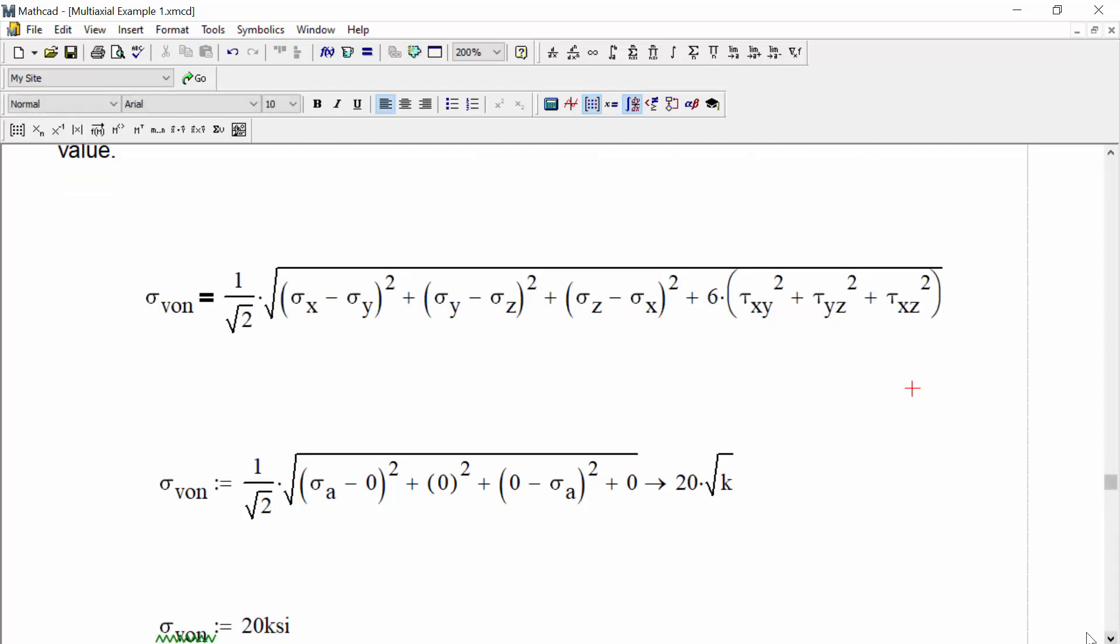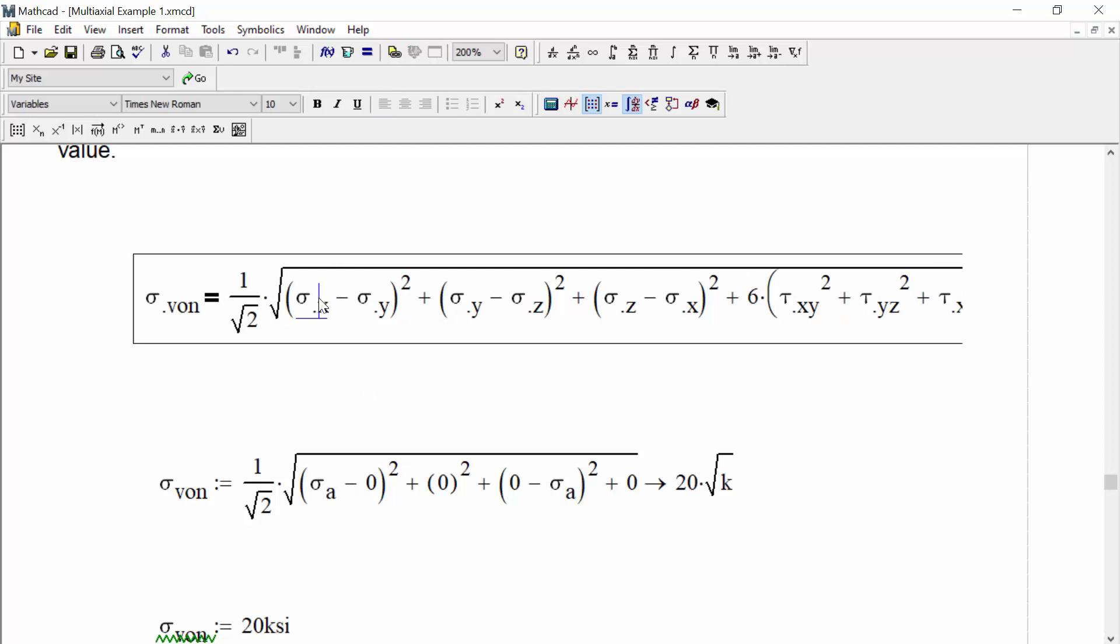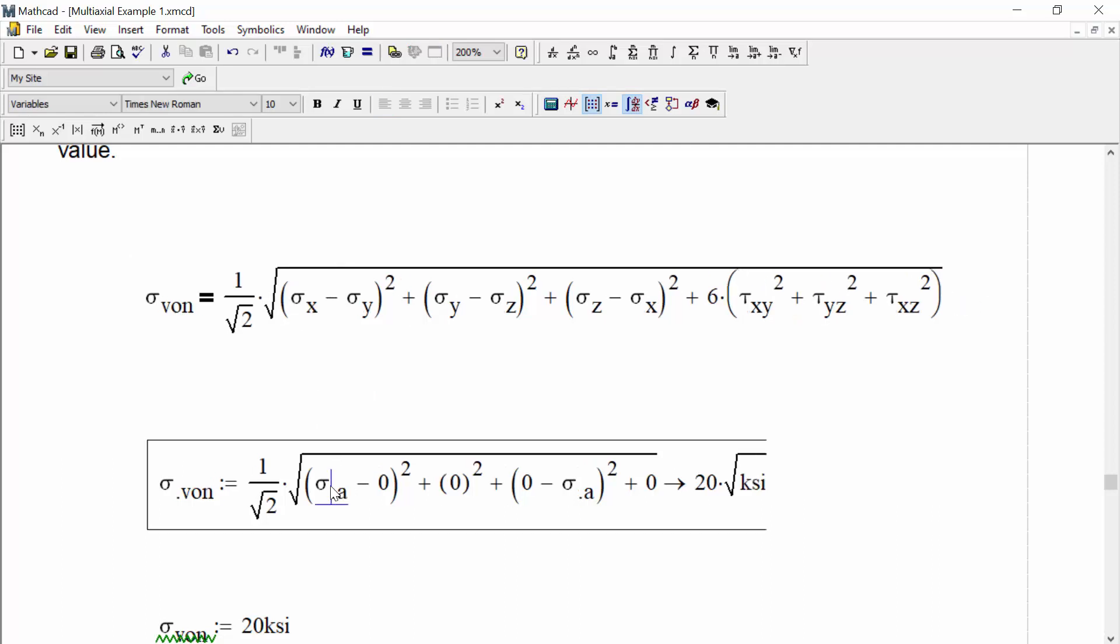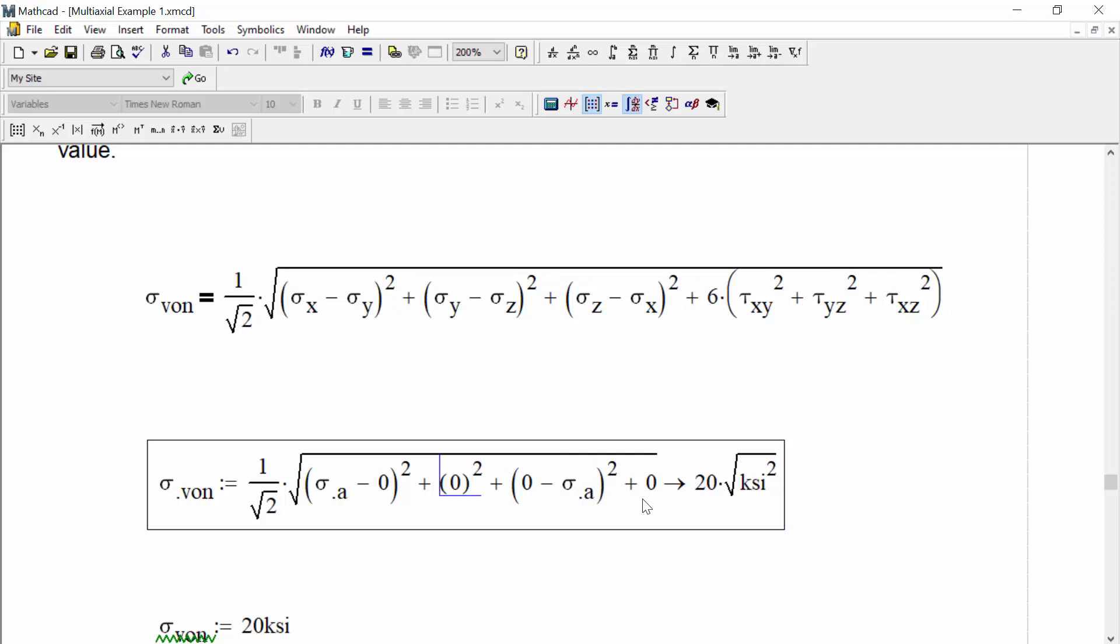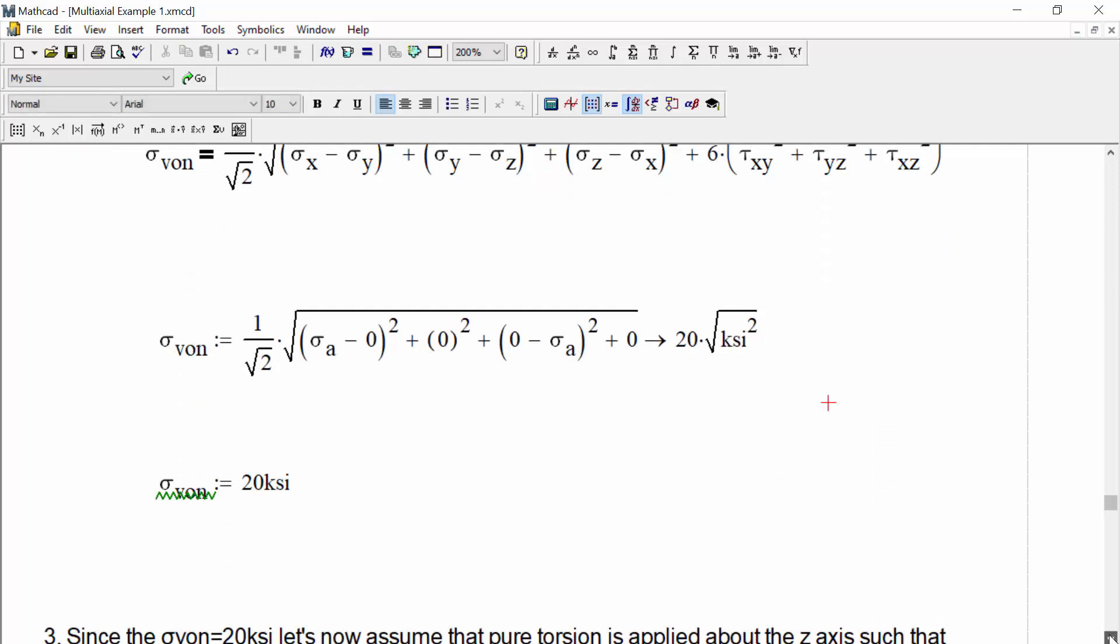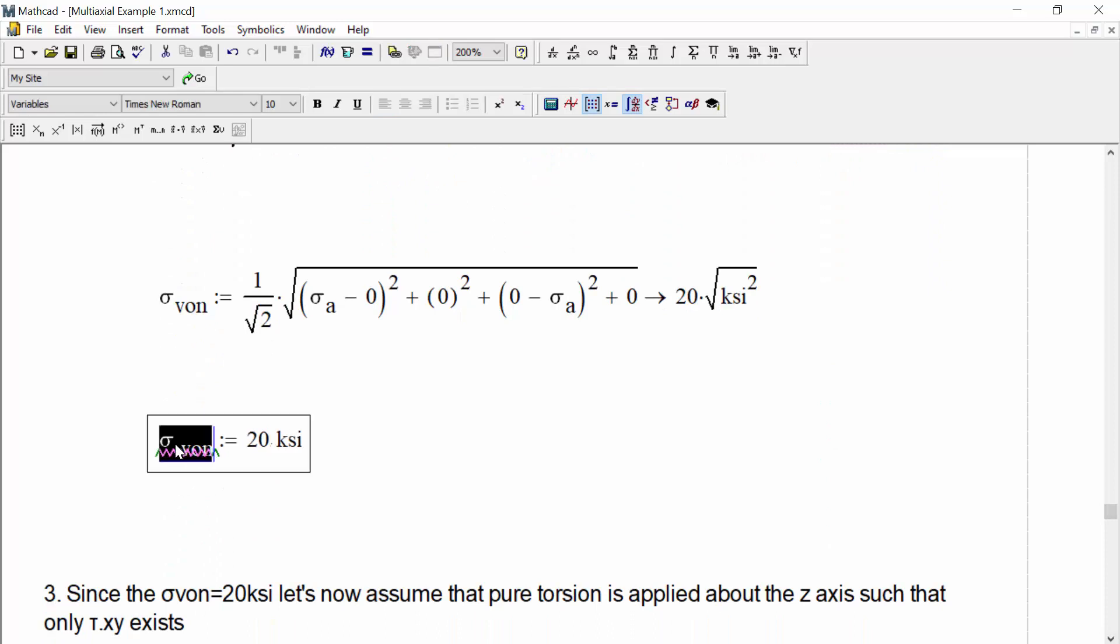Now what we'll do is since we say that the stress amplitude is applied in the x-direction, we are going to replace sigma x with sigma a and all of our other terms. Since there are no stresses in the y, z-direction, or shear stresses, all those other terms will be set equal to 0. When we do that, we can calculate that the von Mises stress for that uniaxial case is equal to 20 KSI. So that's pretty straightforward.